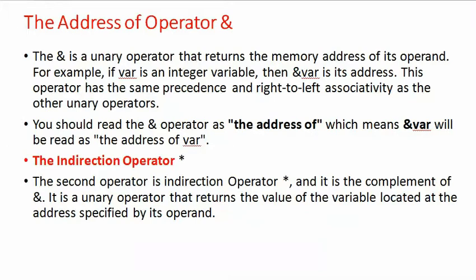The second operator is the indirection operator, represented by the star symbol. It is the complement of the address operator. It is a unary operator that returns the value of the variable located at the address specified by its operand.